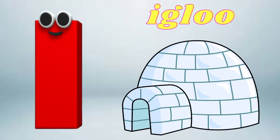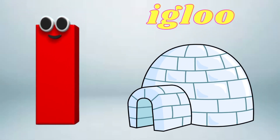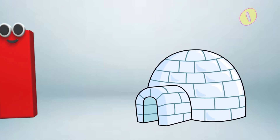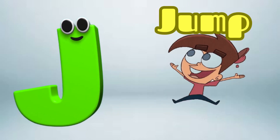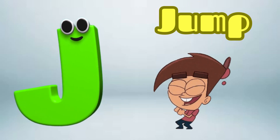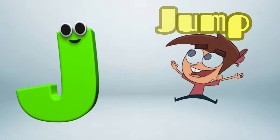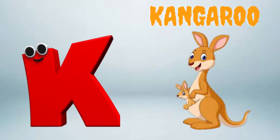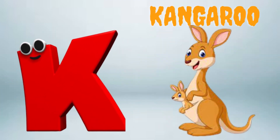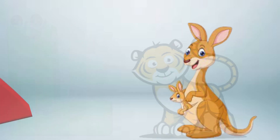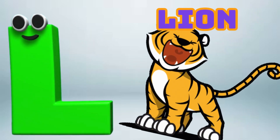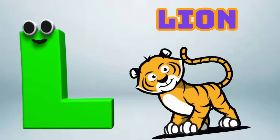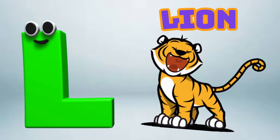I is for Igloo, I-I-Igloo. J is for Jump, J-J-Jump. K is for Kangaroo, K-K-Kangaroo. L is for Lion, L-L-Lion.